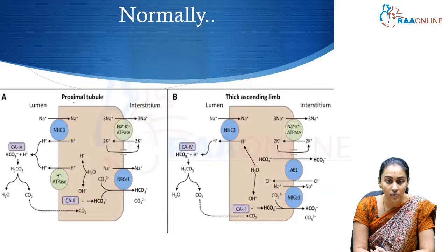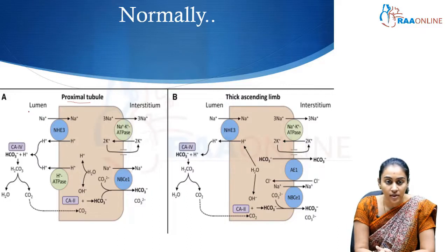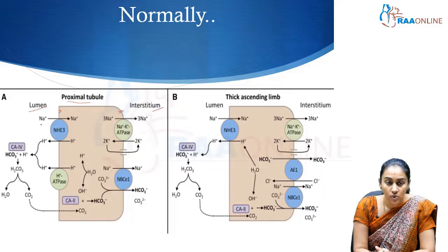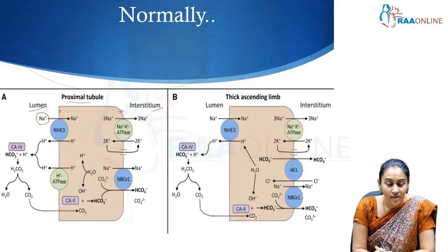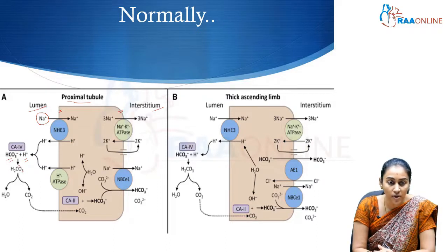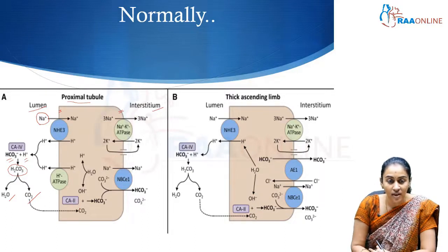Let us look at what normally happens in the proximal tubule. There is the sodium-hydrogen exchanger — the sodium-hydrogen co-transporter. The proximal tubular cell has a luminal membrane and a basolateral membrane. At the sodium-hydrogen exchanger, sodium is reabsorbed from the lumen into the proximal tubule, and in exchange, a hydrogen ion is sent from the cell to the lumen. In the lumen, carbonic anhydrase causes the bicarbonate ion to combine with this hydrogen ion, forming carbonic acid (H₂CO₃), which dissociates into water and carbon dioxide. Carbon dioxide diffuses back into the cell, and water is lost in the urine.